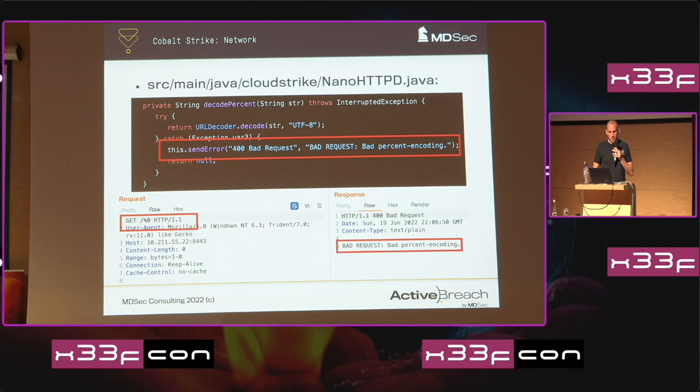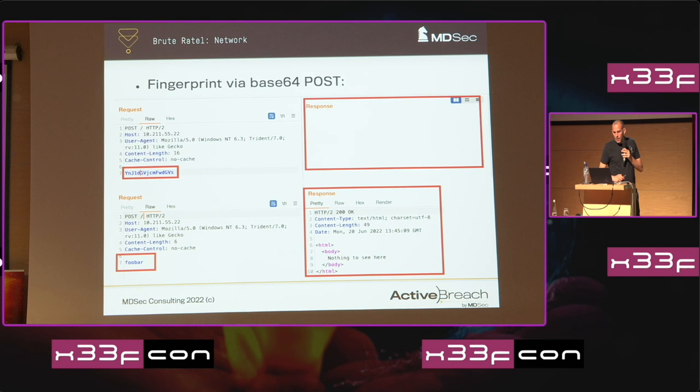How about BrutRetal? We can fingerprint the BrutRetal C2 server: if you send a POST request with valid base64, but the base64 does not unpack to the expected C2 traffic format, that triggers an unhandled exception and you get no response back from the team server. So again, we can use this to scan for BrutRetal servers.